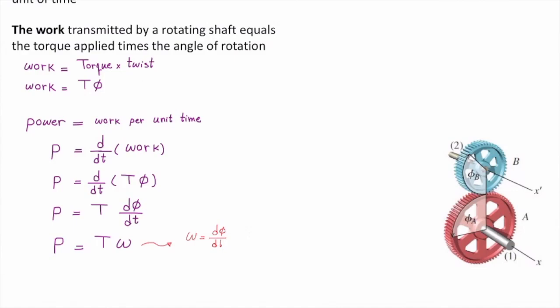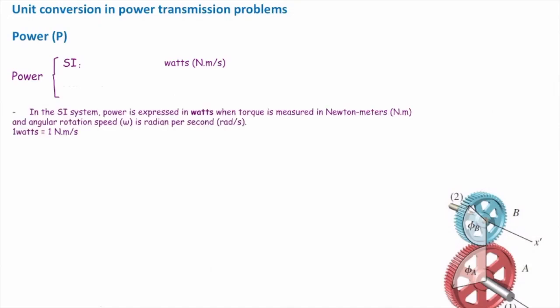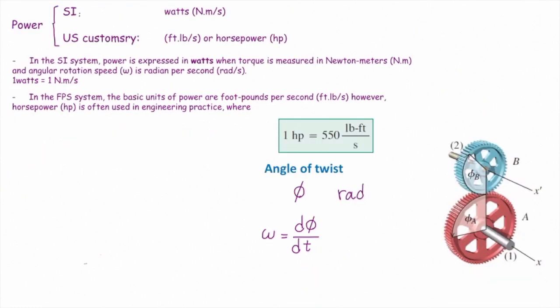For power, in SI unit, we use watts. One watt is newton meter over second. On the other side, in the US customary unit, we either use pound feet over second, or we use another unit, which is horsepower. And horsepower is more common in vehicles. So when we want to talk about the power of a vehicle, we usually work with horsepower. One horsepower is 550 pound feet over second. What is the unit of twist? Unit for phi is radian. What would be the unit for angular velocity, which is twist per time? That would be radian per second.